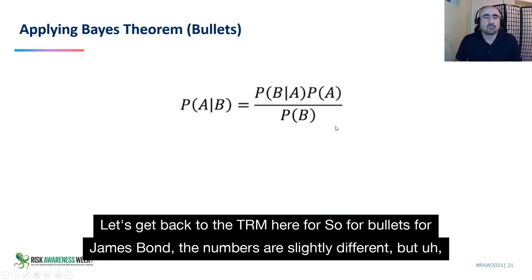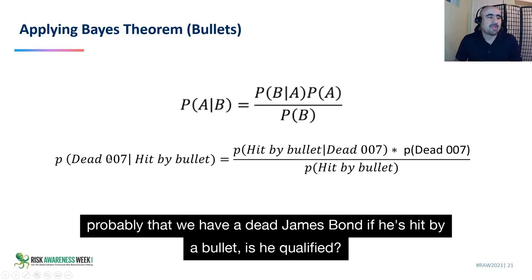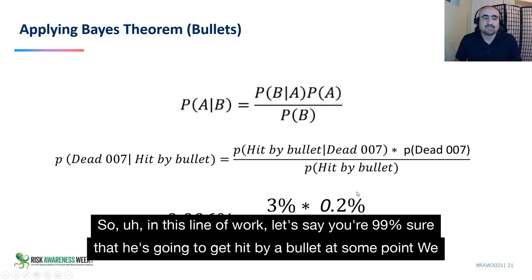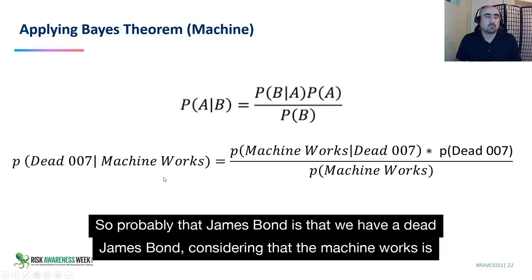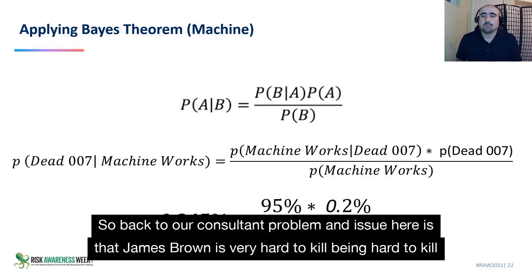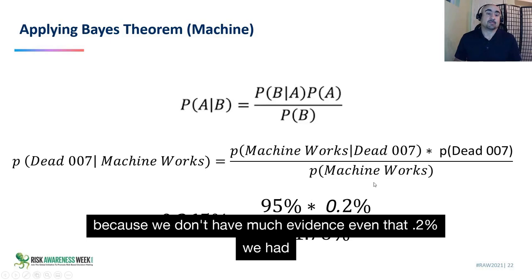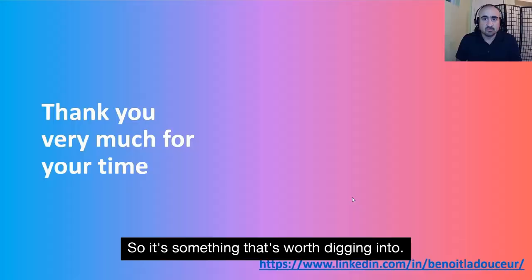For bullets and James Bond, the numbers are slightly different. The probability that we have a dead James Bond if he's hit by a bullet — in this line of work, let's say you're 99% sure that he's going to get hit by a bullet at some point. We don't have a lot of faith this will be the way James Bond goes because it's too boring for a filmmaker. So the probability of a dead James Bond given the machine works equals the probability the machine works. The issue is that James Bond is very hard to kill, and we had to come up with that 0.2% figure based on what we saw in the movie.